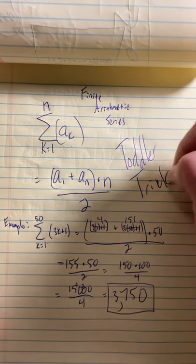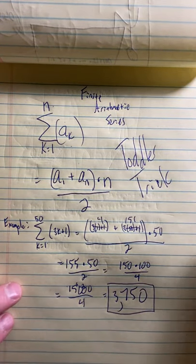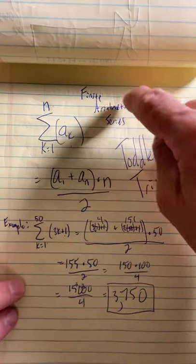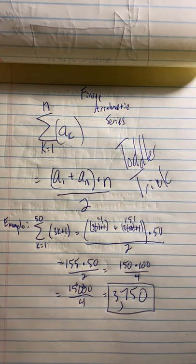Gauss's toddler trick for adding finite arithmetic series. Math made simple. It's Simpson Math.